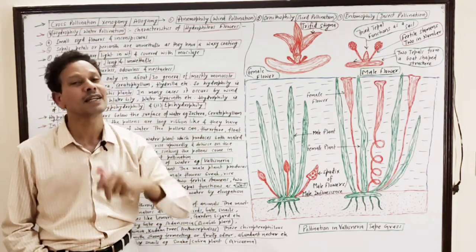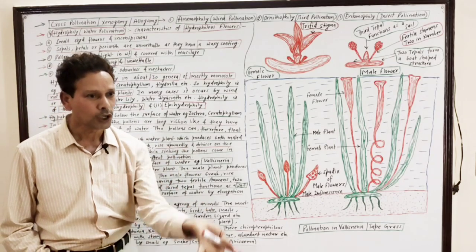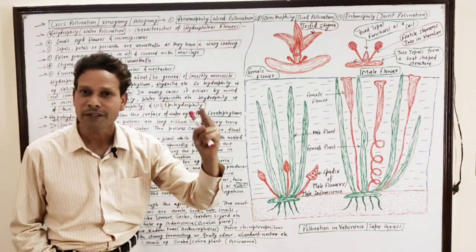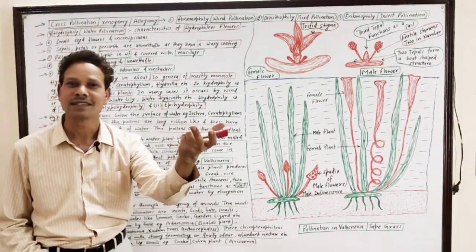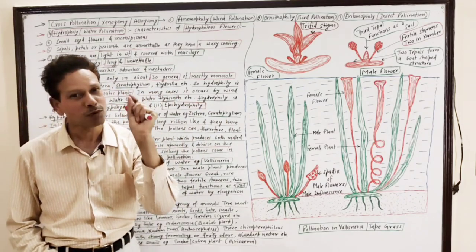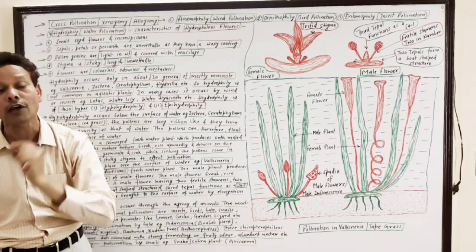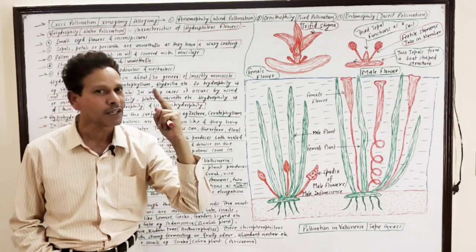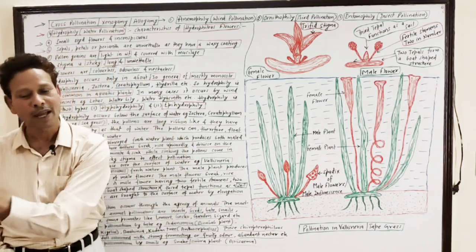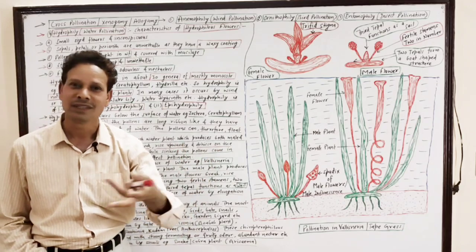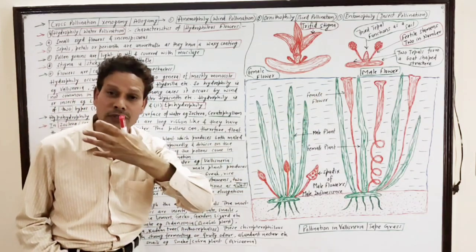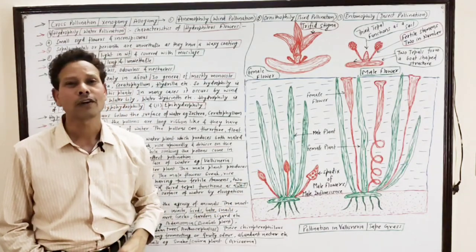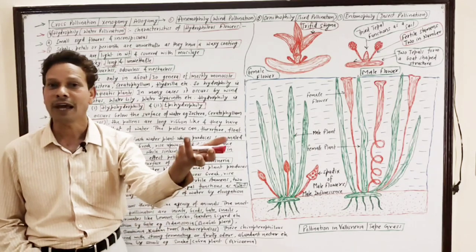The Zostera plant, the seagrass, produces long ribbon-type pollen, and the specific gravity of the pollen remains the same as that of water. In the case of Zostera seagrass, that is a marine submerged aquatic plant, the pollens are long ribbon-like, and the pollens have a specific gravity equal to that of water. So the long ribbon-like pollens float under the surface of water and come in contact with the stigma to effect pollination.